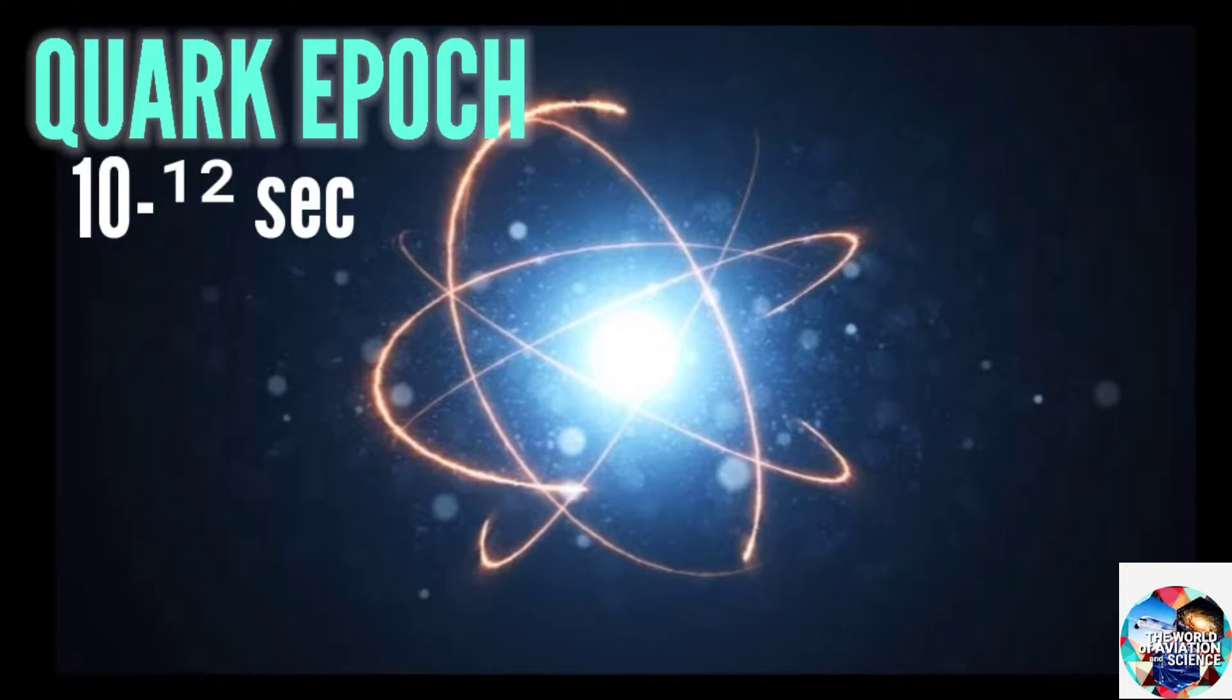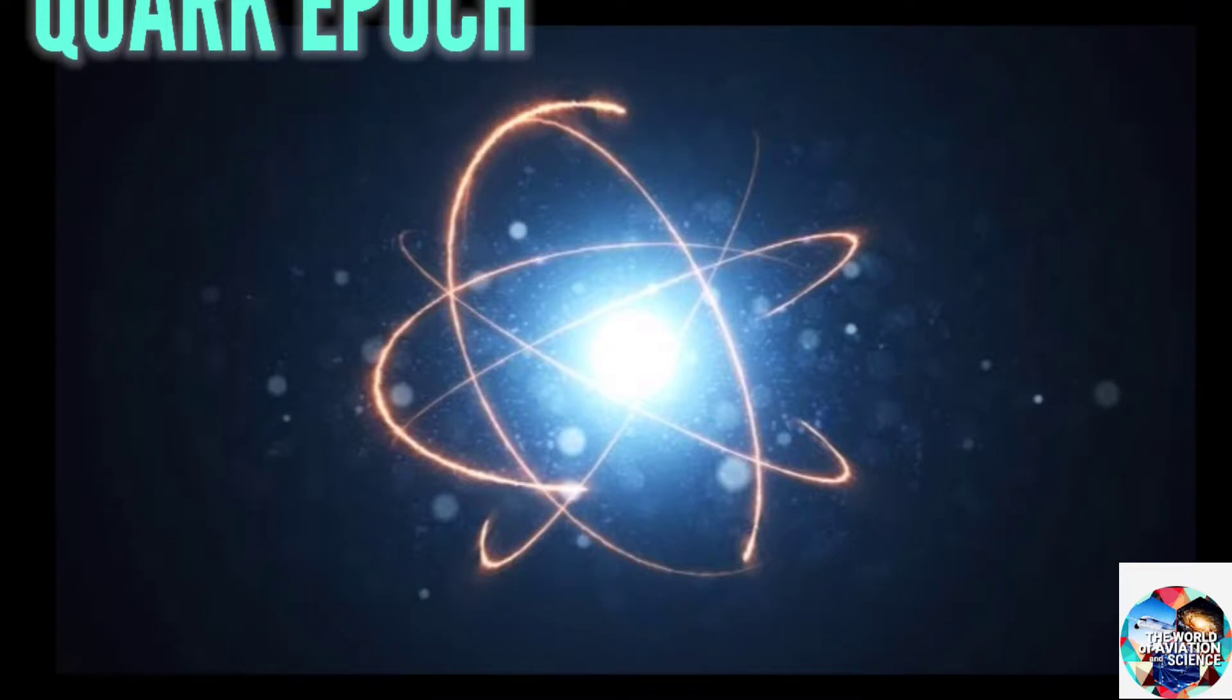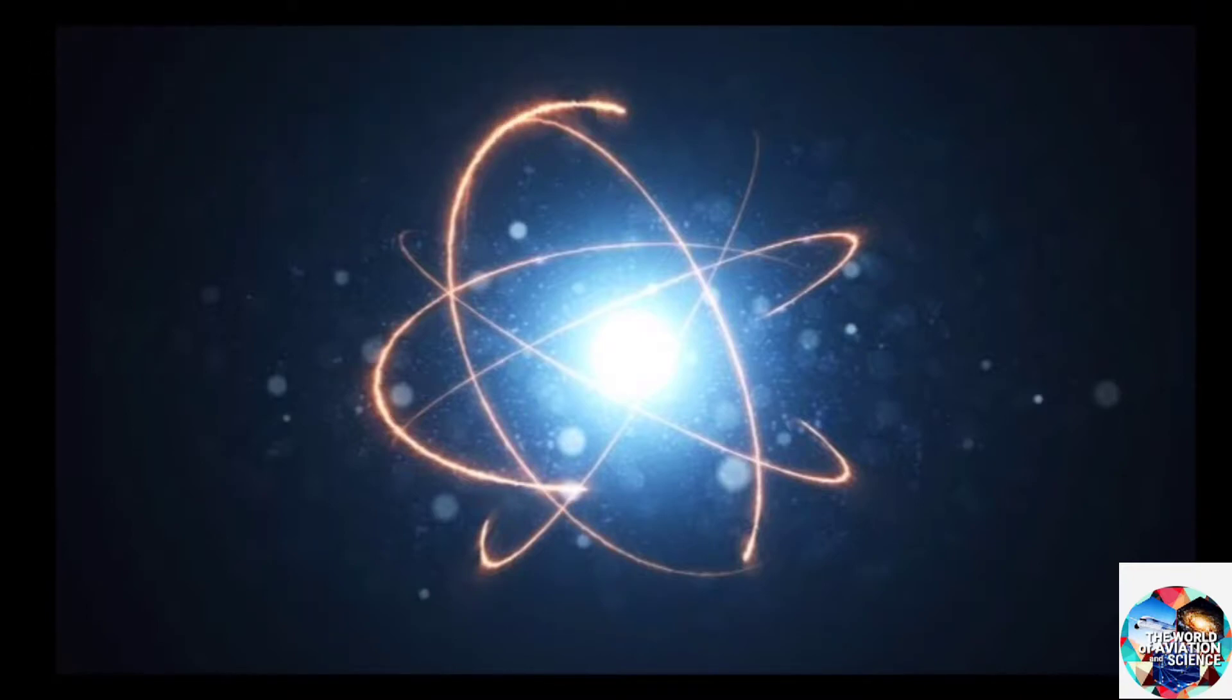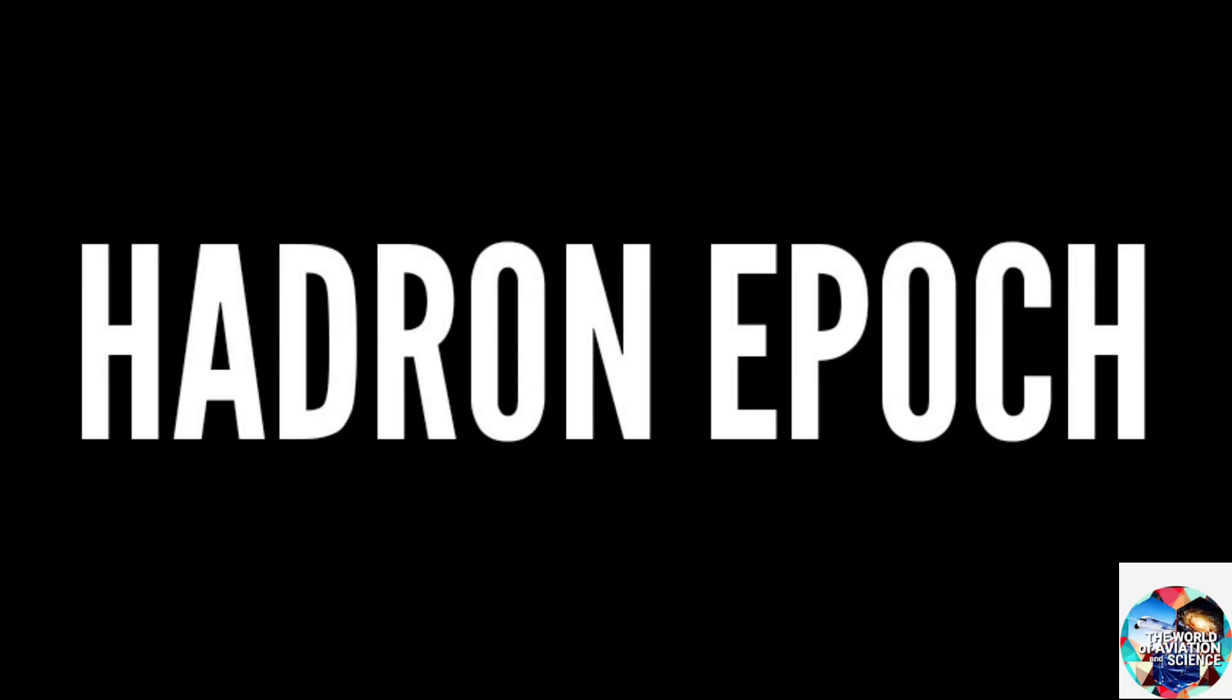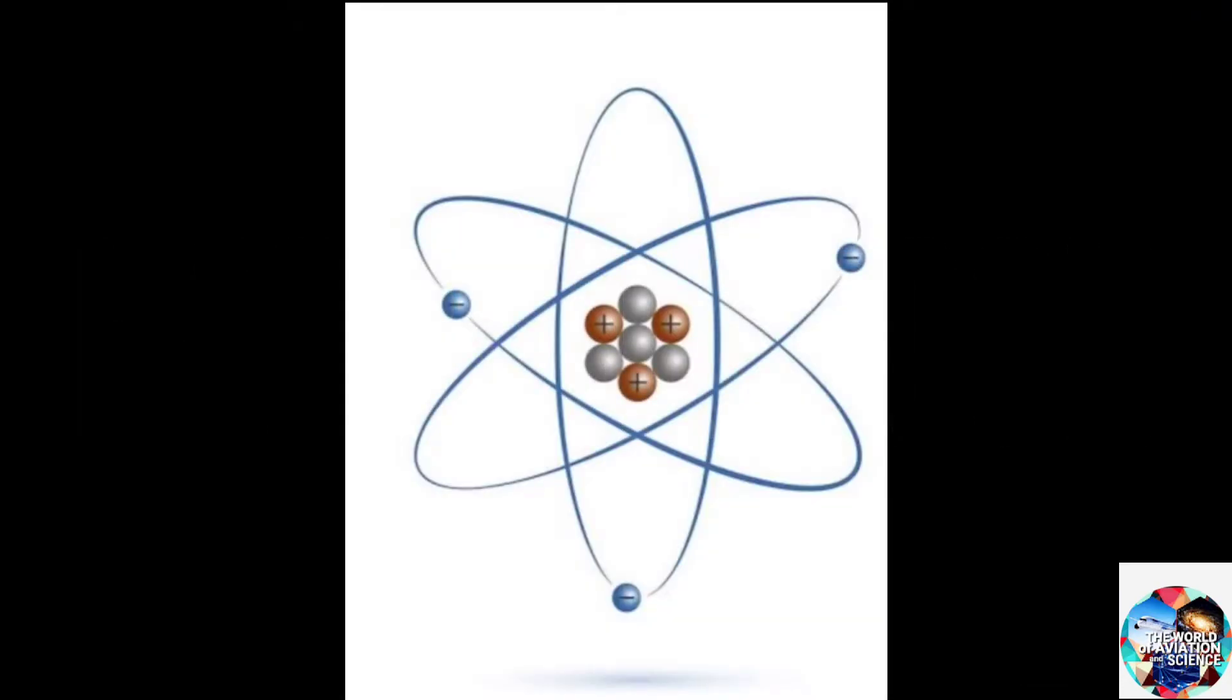Then came the Quark Epoch in which the temperature of universe was still too high for quarks to bind together and form hadrons. In the Hadron Epoch, the universe cooled down enough for the quarks to combine together and form neutrons and protons.